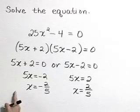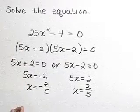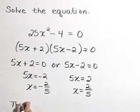It's always wise to check those solutions in your original equation. And as you do, you will find that indeed the solution set is negative 2 fifths and positive 2 fifths.